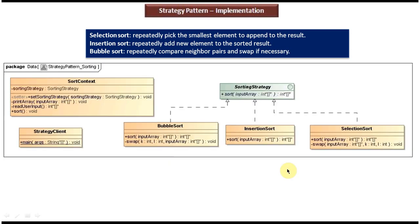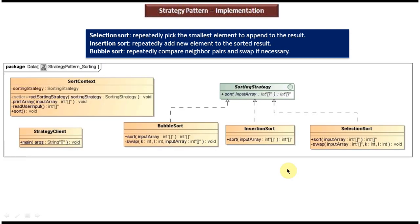This is the class diagram of the scenario which you have just seen. At the top you can see a sorting strategy — it is an interface and it has an abstract method sort, which accepts the input array you want to sort. This interface is implemented by three concrete classes: bubble sort, insertion sort, and selection sort, and these three concrete classes provide the implementation of the sort method.